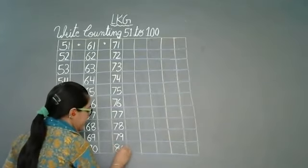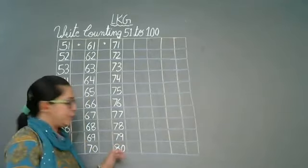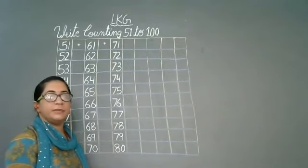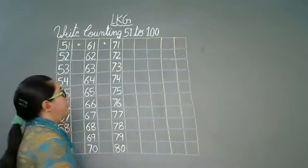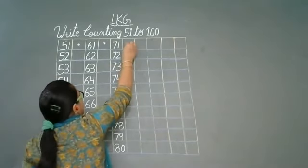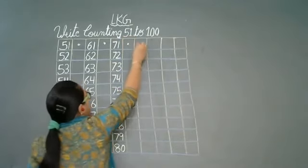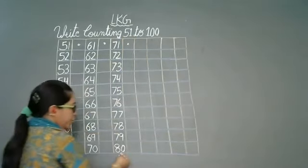8, 0, 80. Yehaan pei 8, 0 aya. To next line me kya likhayenge haam? 8, 1. First box me, second box me dot laga dhenge. Aur next line se hum kareenge. Ok? Kya likhayenge?